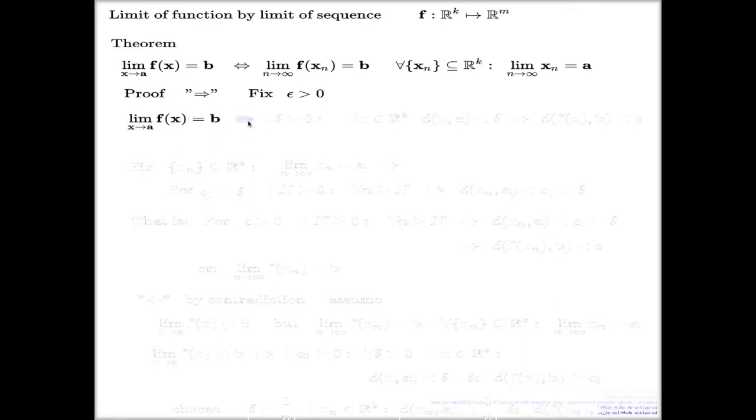Limit of f of x equal b, by definition, implies that there is delta, positive delta, such that every x within the delta distance of a point implies that f of x will be within the epsilon distance of b. It's just expansion of the definition of the limit.